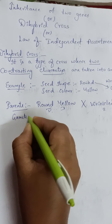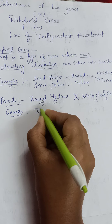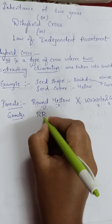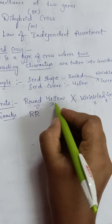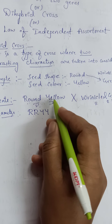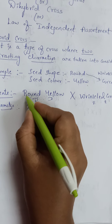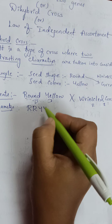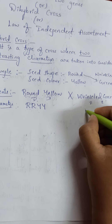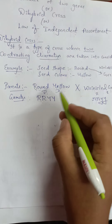The second step is writing gametes. For the dominant parent, round yellow, we write capital R capital R for seed shape and capital Y capital Y for seed color — so four letters total because there are two characteristic features. Since both characters are dominant, it is R R Y Y. For the recessive parent, wrinkled green, we write small r small r small y small y. This is the way of writing gametes in dihybrid cross — just like monohybrid cross but with four letters instead of two.